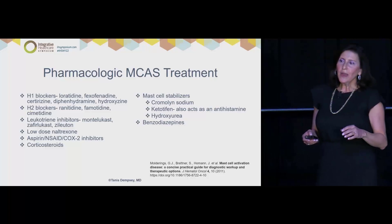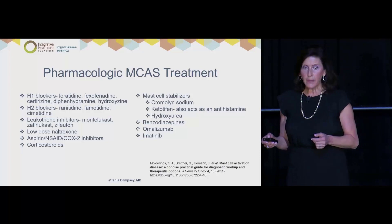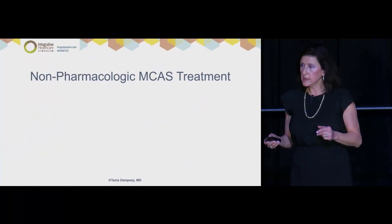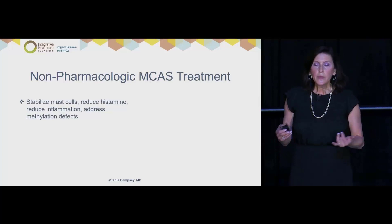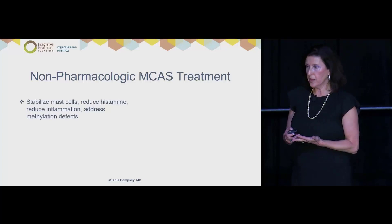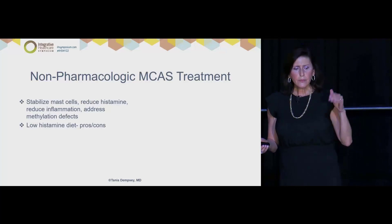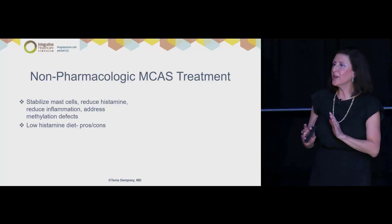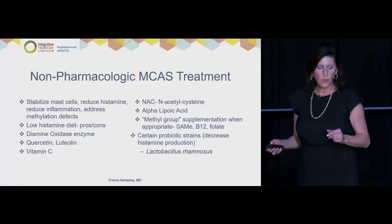We try to avoid steroids, but sometimes it's inevitable. Mast cell stabilizers — cromolyn and ketotifen — are a big part of the practice. Zolair, a monoclonal IgE antibody, works for some. Imatinib as a tyrosine kinase inhibitor might have an effect. Non-pharmacologically, we're setting the foundation of their health — thinking about their diet, reducing inflammation. They may have methylation issues, which affects histamine metabolism. The histamine diet is controversial — there are about five different versions online, they're all different. Everything has to be personalized and individualized.